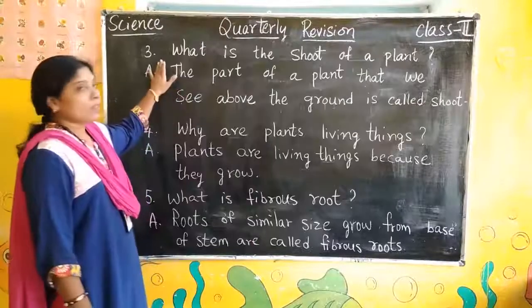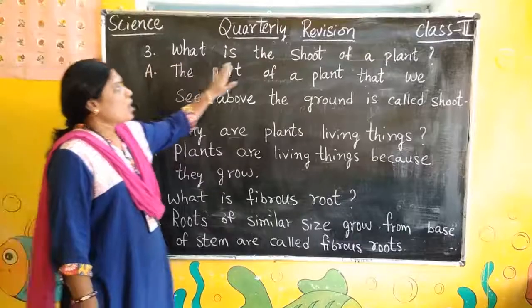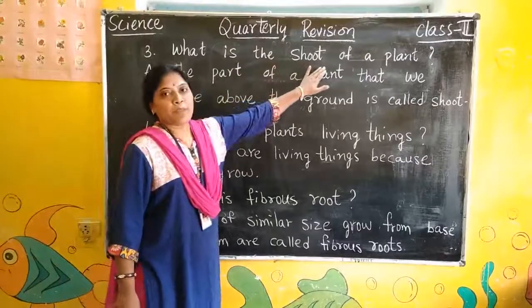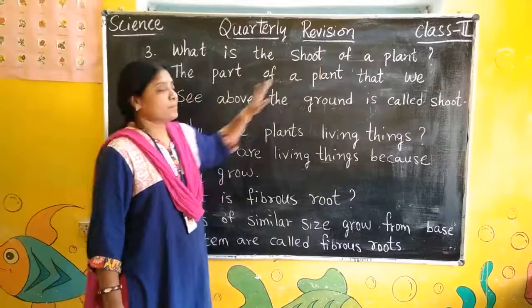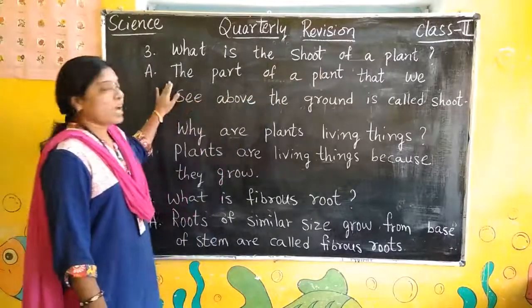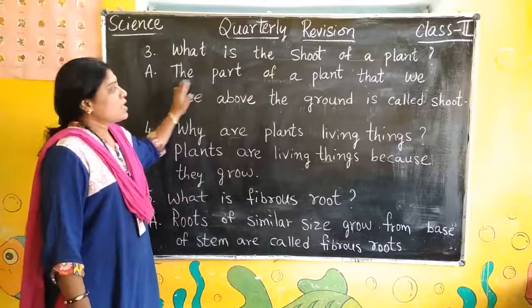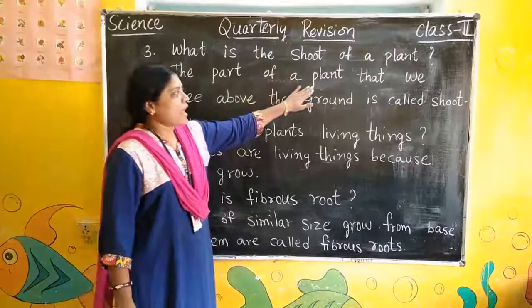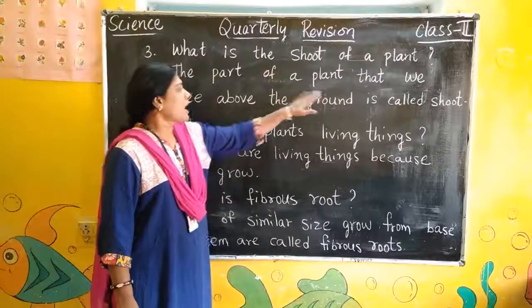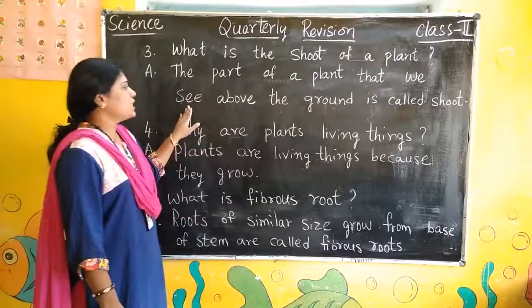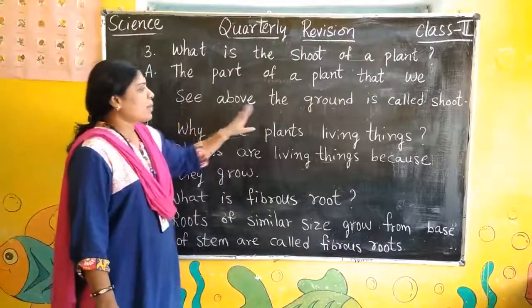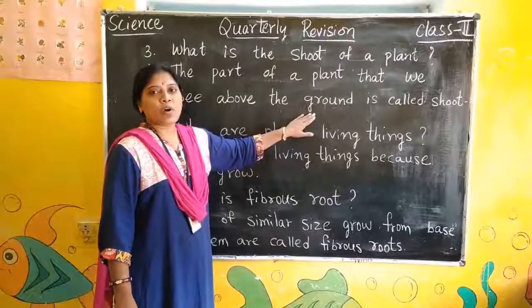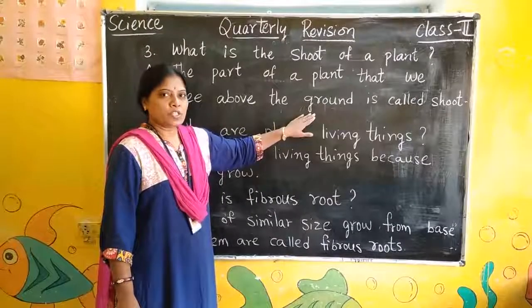Third question: What is the shoot of a plant? The part of a plant that we see above the ground is called the shoot.